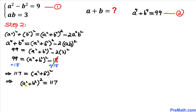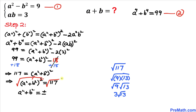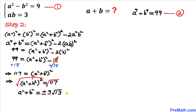Taking the square root on both sides, we get a squared plus b squared equals positive or negative square root of 117. The square root of 117 simplifies as 3 times square root of 13. So a squared plus b squared equals plus or minus 3 times square root of 13. Call this equation number 3.